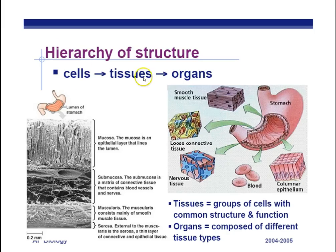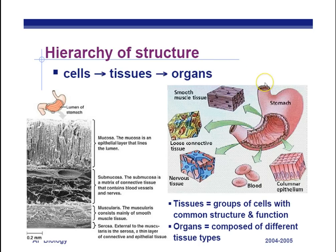To summarize: cells make up tissues, tissues make up organs, organs make up organ systems. In the case of the digestive system, we include the small intestine, large intestine, and other parts. And then organ systems make up the organism.